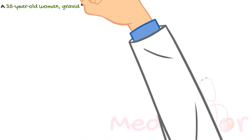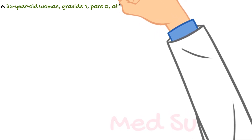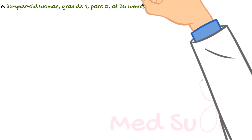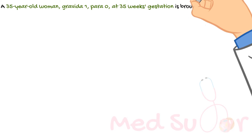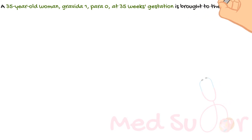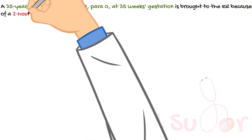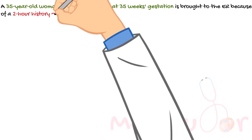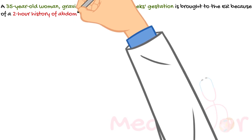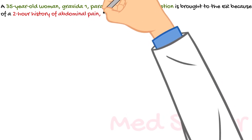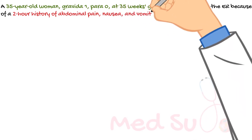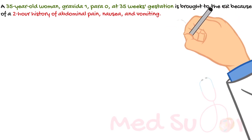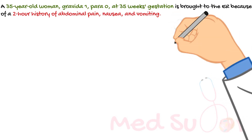Even though HELLP syndrome is usually managed by immediate delivery regardless of gestational age if the mother is in distress, we can still be conservative if the baby is still premature or before lung maturity. Here is a 35-year-old woman, gravida 1, para 0, at 35-week gestation. If she's beyond fetal lung maturity, then yes, we're going to deliver her immediately. The rest of the vignette is just confirming our diagnosis and management that we already know.